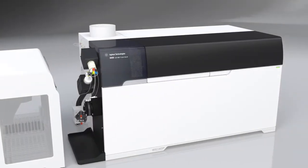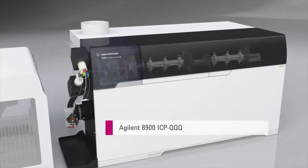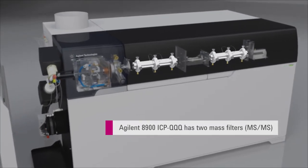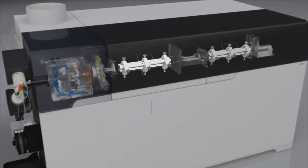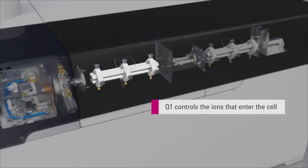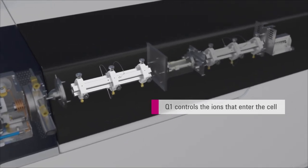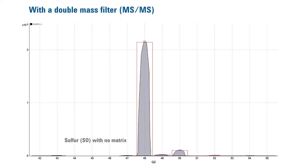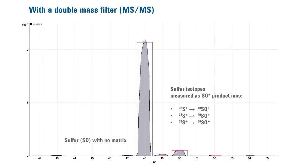The new Agilent 8900 ICP triple-quad provides the solution. The 8900's tandem mass spectrometer configuration uses an additional quadruple mass filter, Q1, placed before the cell. In MS-MS operation, Q1 controls the ions that can enter the cell. The same reaction chemistry is used, but Q1 controls the target sulfur isotope that can enter the cell.